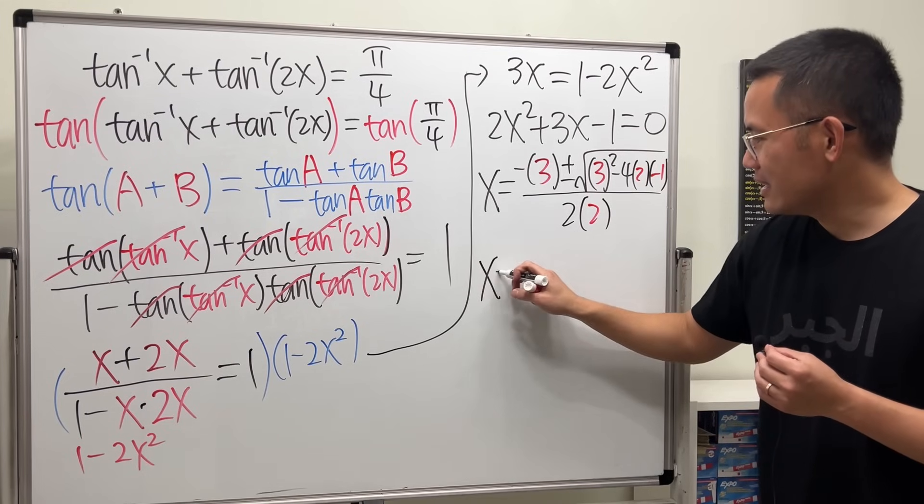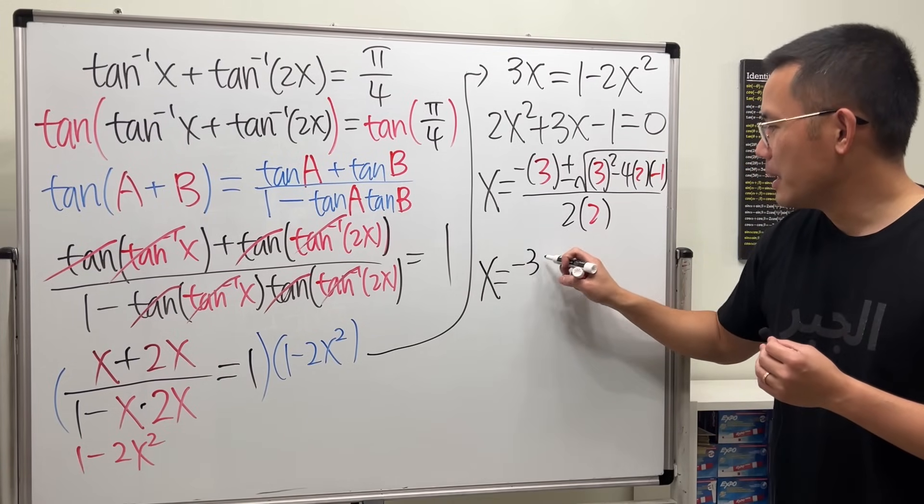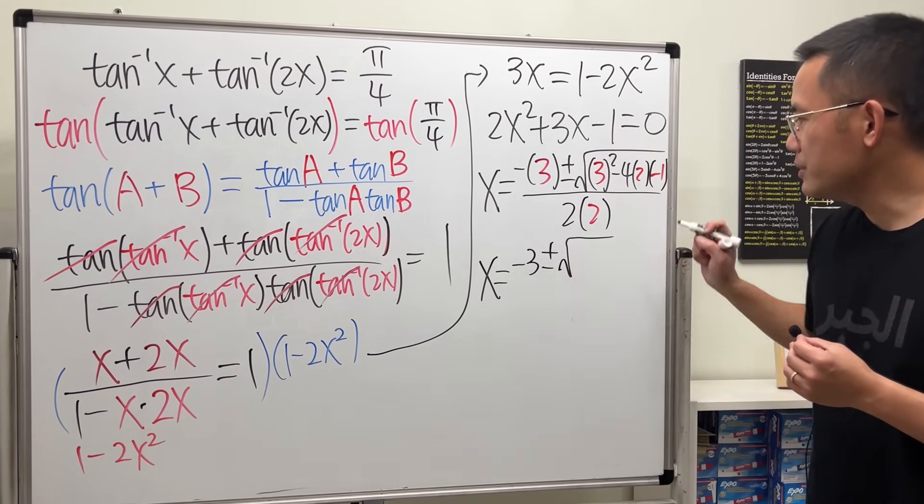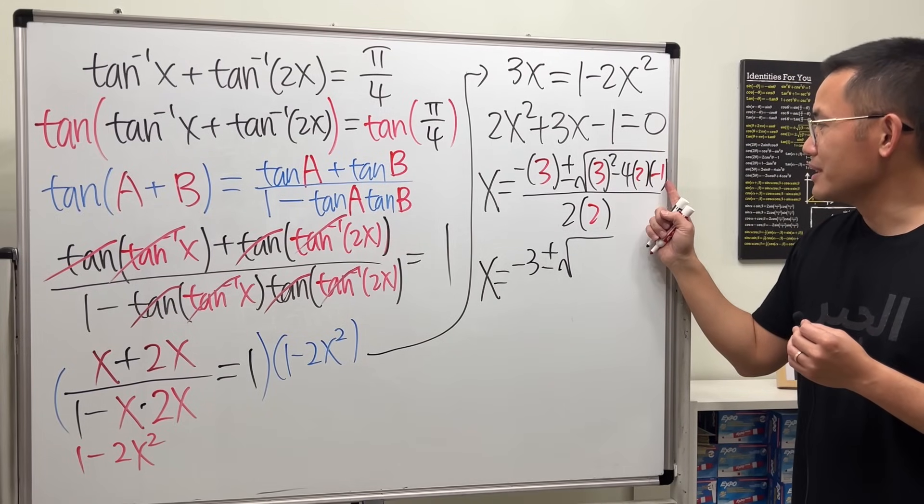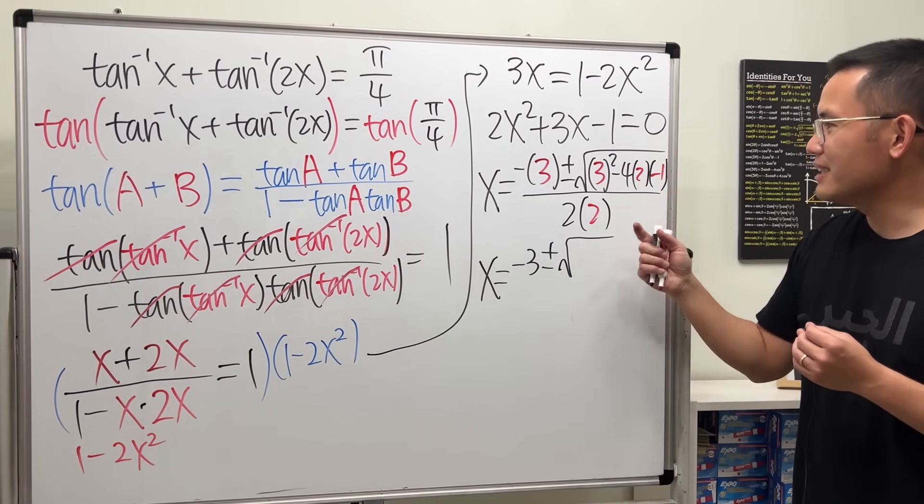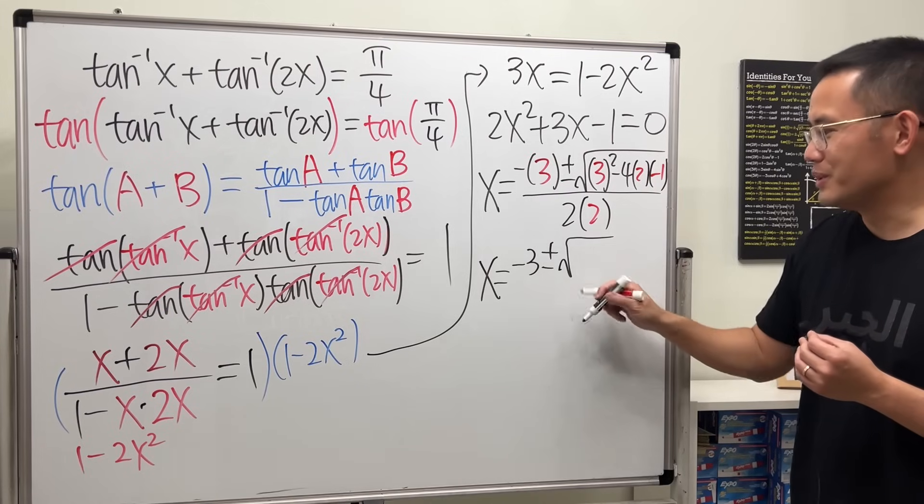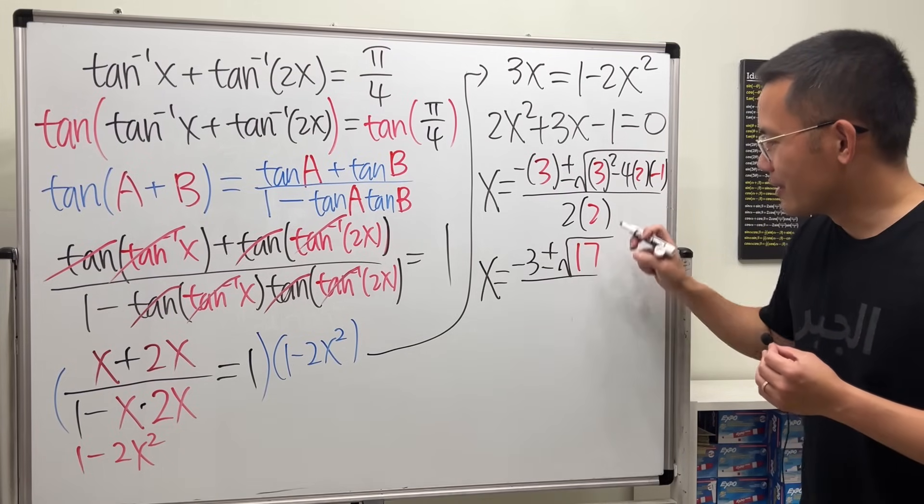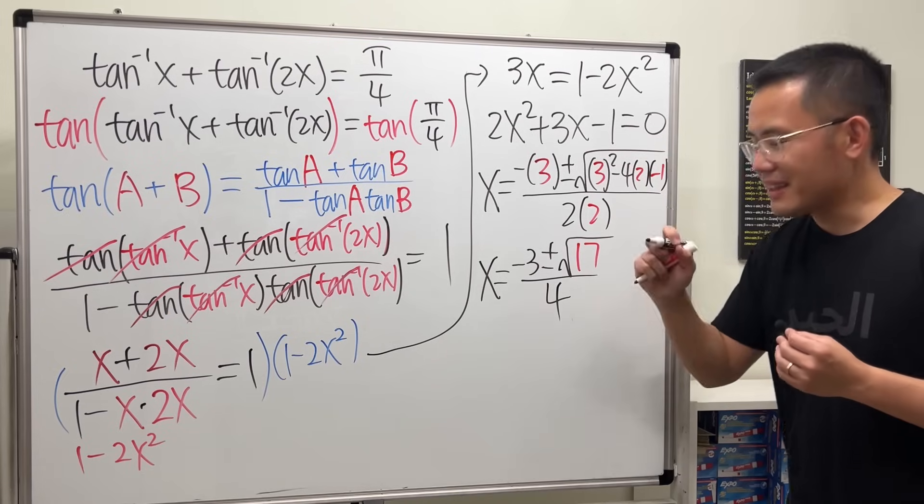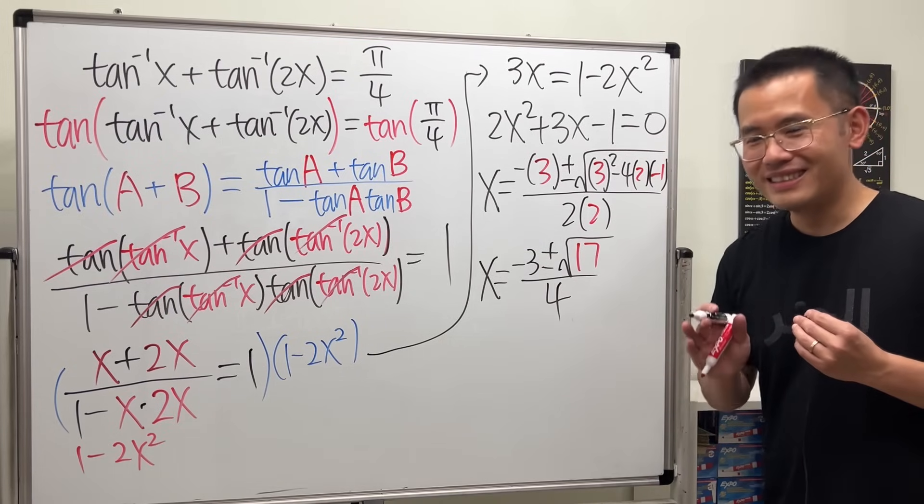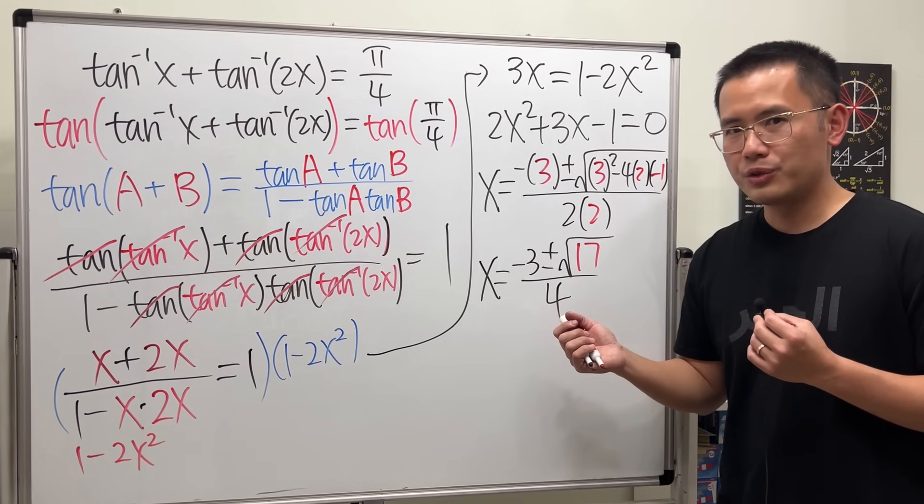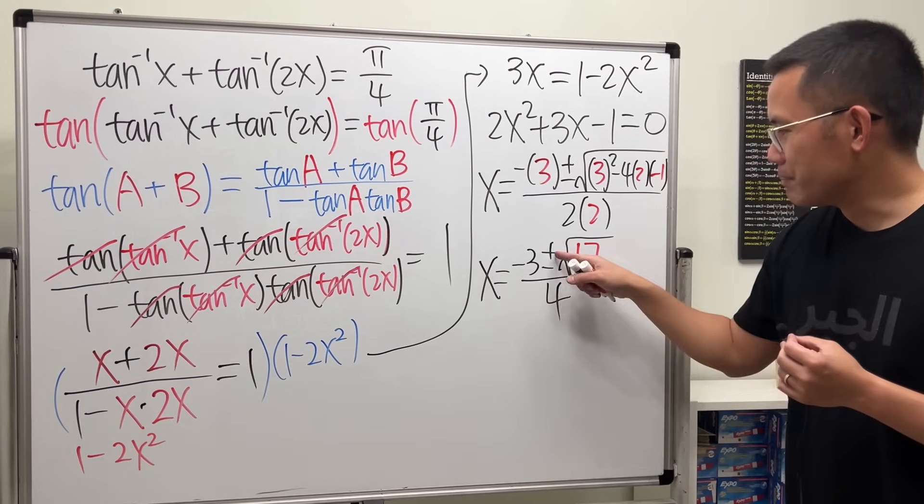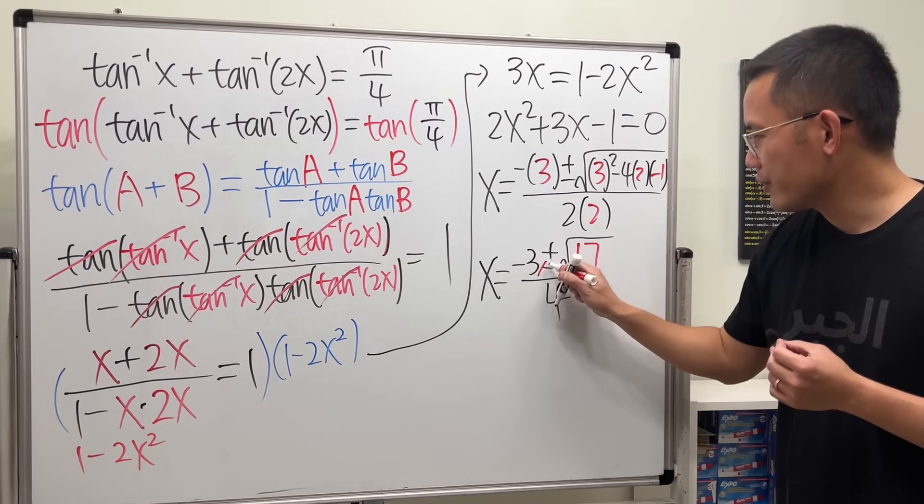And that's just the quadratic formula. x equals negative 3 plus or minus square root of 3 squared, negative 1, and then over 2 times 2. All right, now let's finish it. x is equal to negative 3 plus or minus square root, this is 9, 4 times 2 times 1 is 8. Negative times negative is plus, so 9 plus 8, which is 17, all over 4. Done. No, not yet.